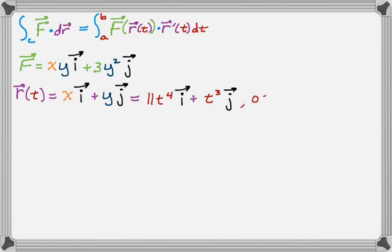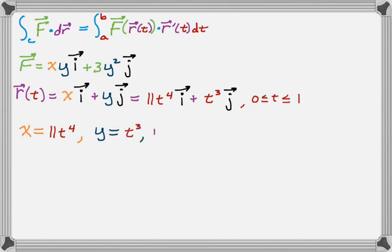From that we can see that t goes from zero to one — you actually have to know that in this case, there's nothing obvious about it. x is going to be 11t to the fourth, y is going to be t cubed, and r prime of t, which we need, is 44t³·i plus 3t²·j.